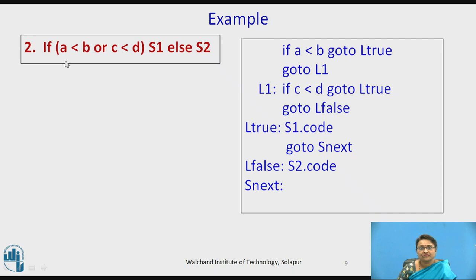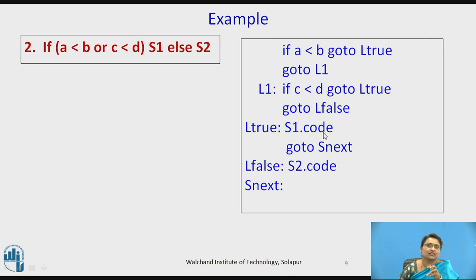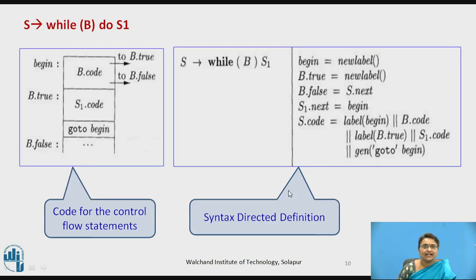The example is: if a < b OR c < d then S1 else S2. If a < b is true, since OR is used, it goes directly to L_true without checking the second condition. If false, it checks c < d — if true it goes to L_true, otherwise it goes to L_false to execute S2's code. After S1 executes, control moves to the next code.